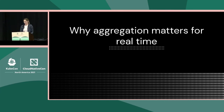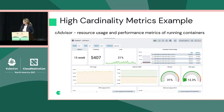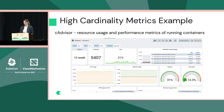So why does aggregation matter for real-time? Looking at this example of the cAdvisor dashboard — cAdvisor is a way to get your resource usage and performance metrics of all of your running pods or containers, so CPU, memory, infrastructure-level metrics. It runs as a daemon set inside of a kubelet, and in this particular dashboard we're looking at all of the pods within our gateway application.